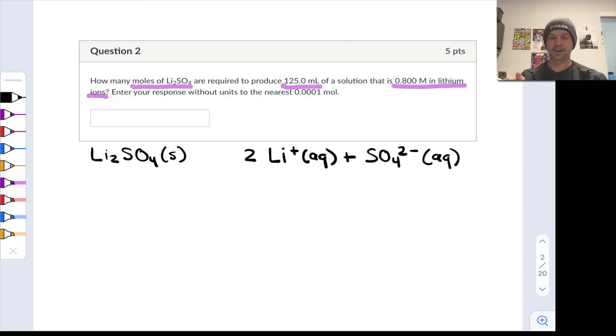In essence what we want to know is I've got a target volume, let's go ahead and write that down: 125 milliliters and let's convert that to liters because that's going to make our life easier later, 0.125 liters. I've got a target concentration of 0.8 moles per liter of lithium cations.